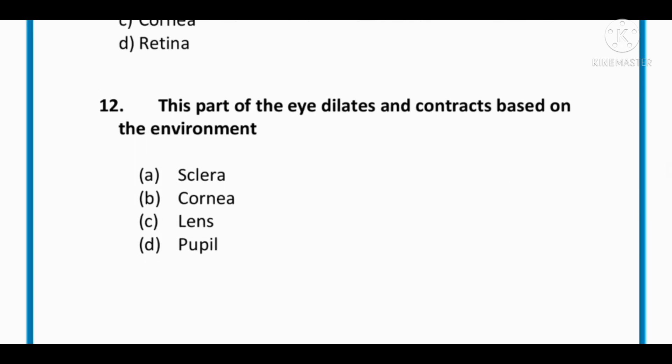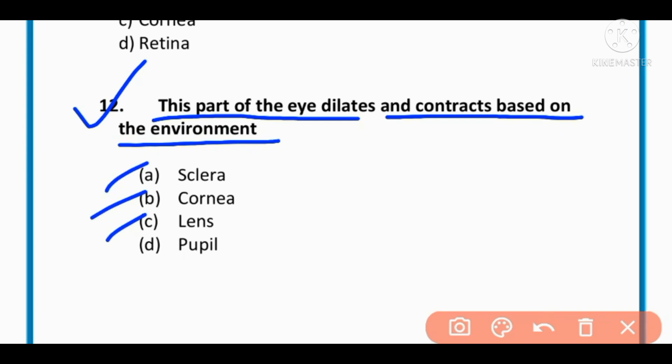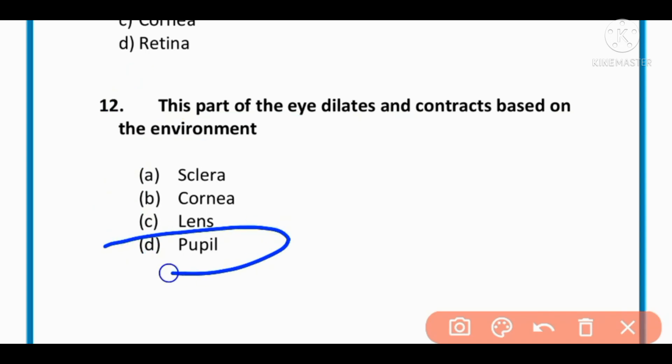MCQ number 12: This part of eye dilates and constricts based on the environment: sclera, cornea, lens, or pupil. The correct option is D: pupil.